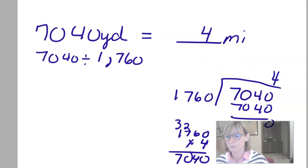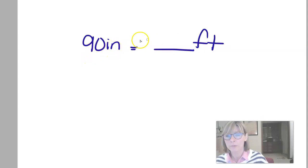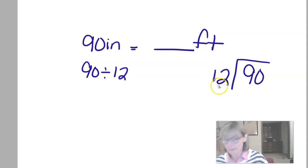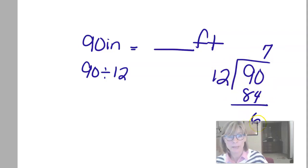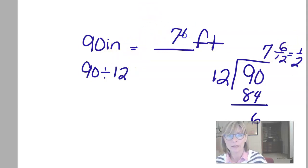One last problem before you get started with your activity: 90 inches — we're going to turn that into feet. I'm going from a smaller unit to a larger, so I'm going to divide. There are 12 inches in a foot, so I need to do 90 divided by 12. I know 12 times 7 is 84, so it goes 7 times with 6 left over. I could write it as 7 feet with 6 inches left over, or as a fraction: 6 left over is 6 out of 12, which is 6 twelfths — equivalent to one half. So 90 inches is equal to 7 and one-half feet.